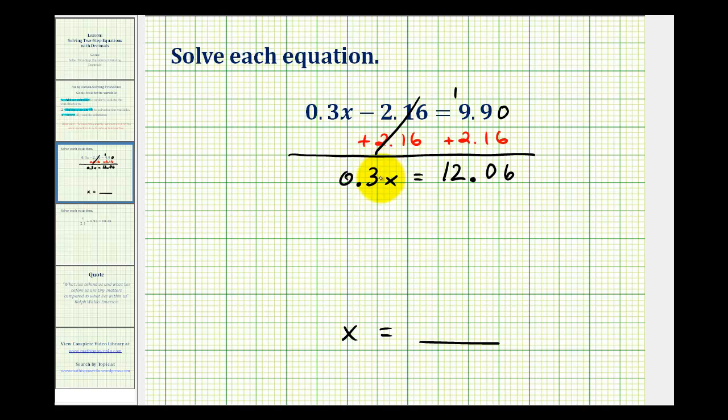0.3x means 0.3 times x. So, to undo this multiplication, we'll have to divide both sides by 0.3. Well, 0.3 divided by 0.3 would be 1. And 1 times x would be x. And now, we need to perform this division. So, let's set this up. We'll have 12.06 divided by 0.3. The first step is to make our divisor a whole number by moving the decimal point to the right one place to here. And then, we must do the same to the dividend. So, we'll move the decimal point from here to here and then straight up into our quotient.